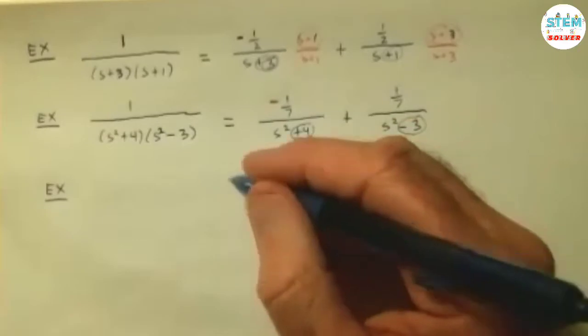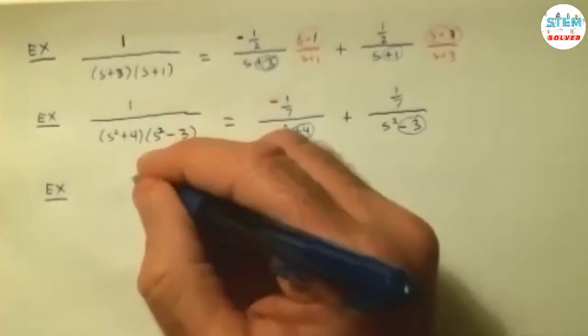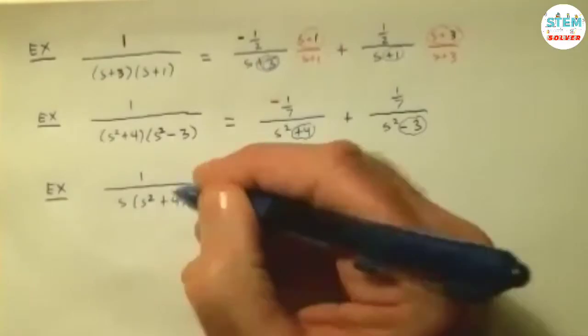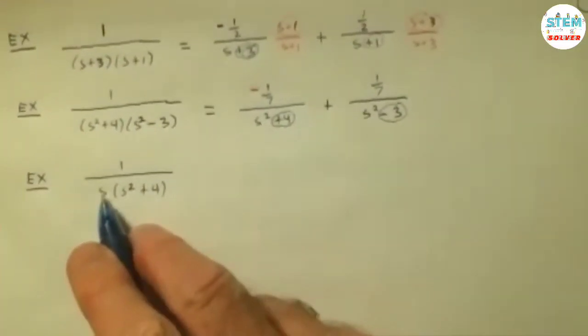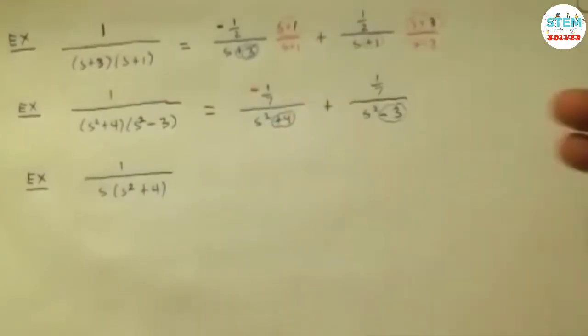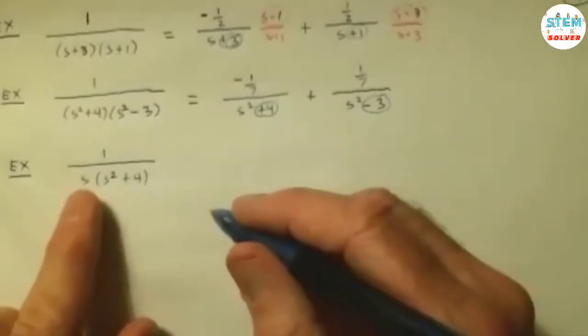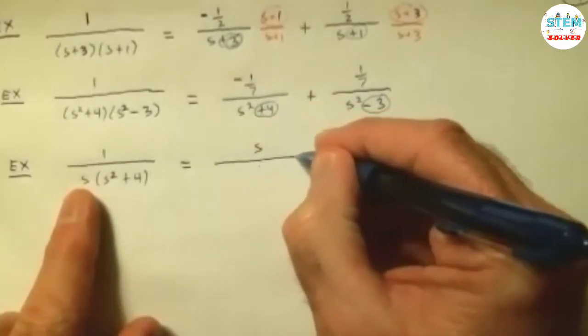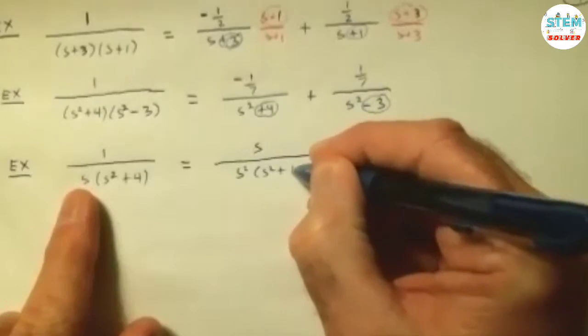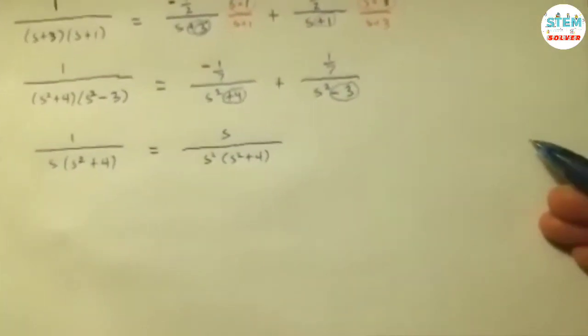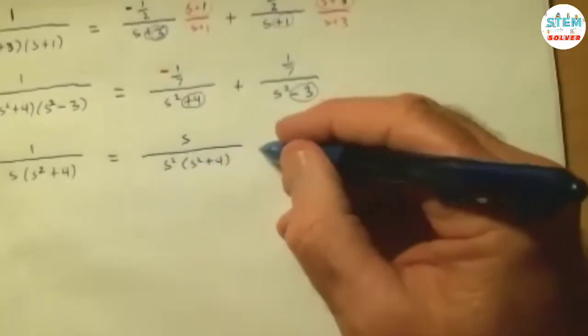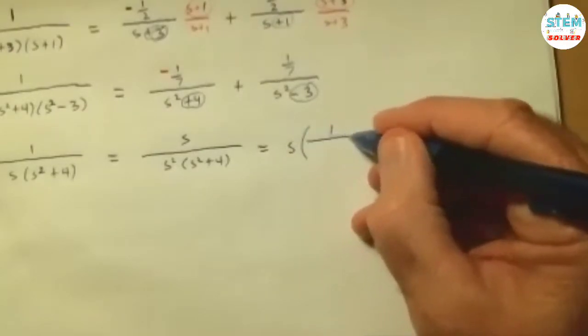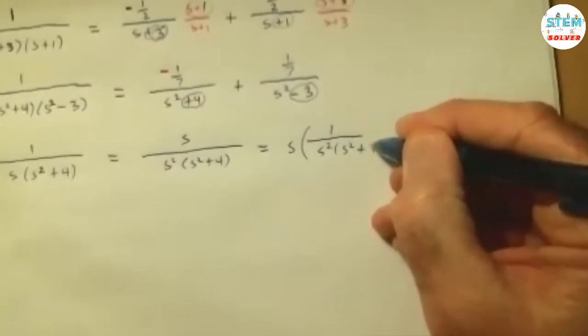Sometimes you can. So, maybe you have something that is like this. You have 1 over s times s squared plus 4. And you're going, well, I can't do that, right? Because that's an s, that's an s squared. This is not going to work. It's not going to work. Well, maybe we can make it an s squared, right? So, what I could do is write this as s over s squared times s squared plus 4, right? Same thing if that's 1 over s, right? Now, again, I need to have a 1 on top to do this. What I really do, I'm going to pull the s out. And then I'll be left with 1 over s squared times s squared plus 4, right?